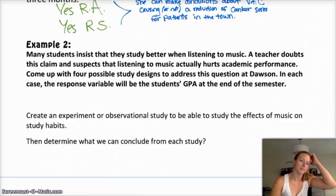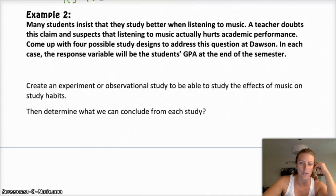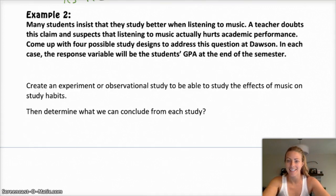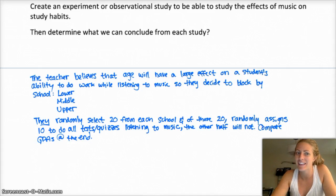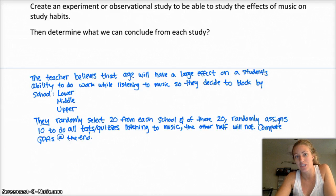The next example says many students insist they study better when listening to music. A teacher doubts this claim and suspects that listening to music actually hurts academic performance. Come up with four possible study designs to address the question. In each case, the response variable will be the student's GPA at the end of the semester. So I wrote something down, but I don't love this answer. What I did is I randomly selected people and, like, forced them to listen to music during a test or a quiz. So using random selection and random assignment to each group.